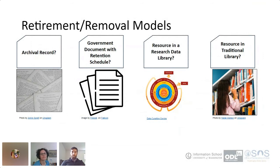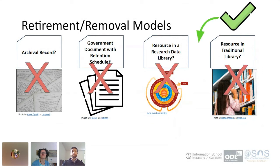As Kathleen mentioned, we looked at several domains for guidance on what to do with government data that might be removed from the portal. We considered archives and talked to archivists, thought about retention schedules for government documents, looked at research data libraries and the data curation life cycle, and also considered public libraries — can open government data just be weeded like a library collection? We settled on the conclusion that it doesn't really fit in any one category, although any given data set might be appropriate for the archive or might have some retention rules. But data sets seem to fit best between research data libraries and public libraries.